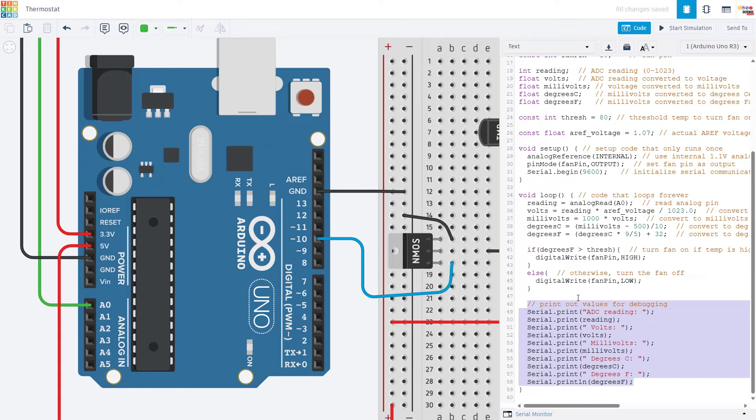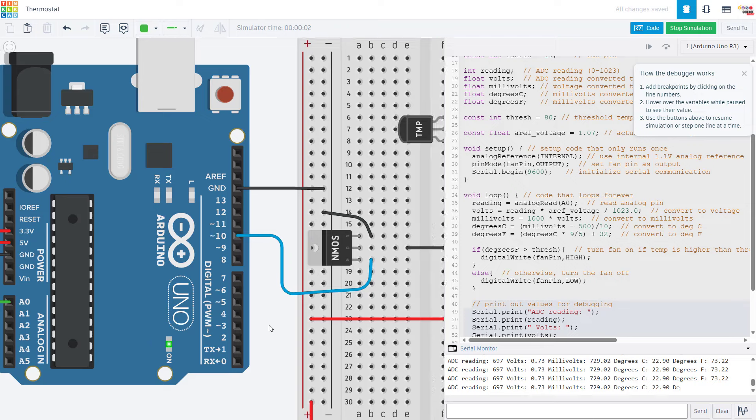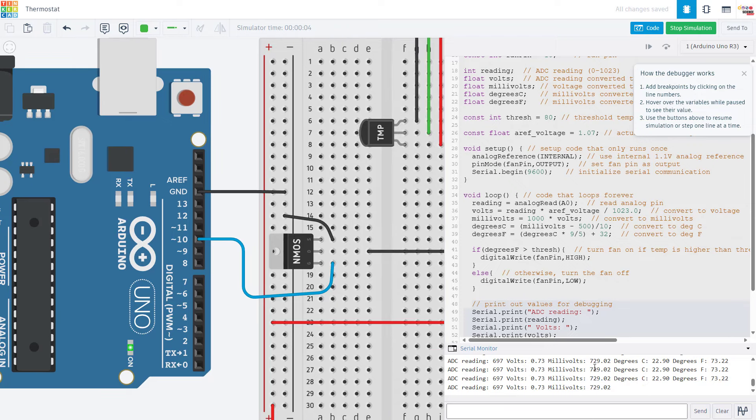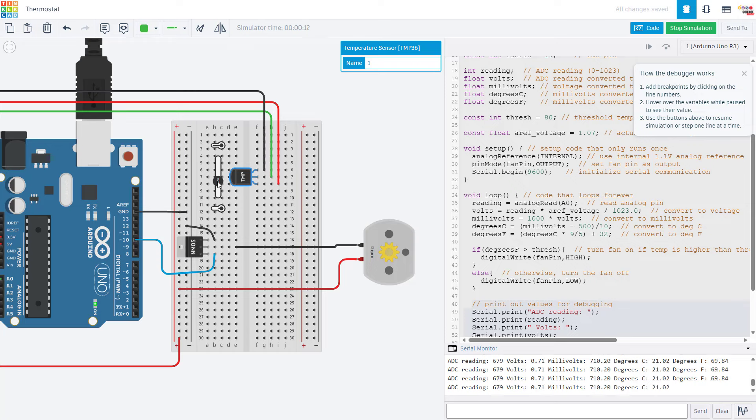We finally then have a bunch of serial print statements to print out the various values for the temperature sensors. If I start the simulation here and open up the serial monitor, you will see the initial ADC reading, which is a number between 0 and 1023, the voltage in volts, the voltage in millivolts, and then the temperatures in both degrees Celsius and degrees Fahrenheit. And the Tinkercad simulator will let me click on the temperature sensor and drag a slider bar to simulate changing the temperature. We see that right now I am below my threshold of 80 degrees Fahrenheit. If I drag that up a little bit, then once I exceed that threshold, the motor turns on. With the physical setup, that would then be blowing cool air over the temperature sensor, which would cause the temperature to drop again. And once I drop back below that threshold, the motor turns off.